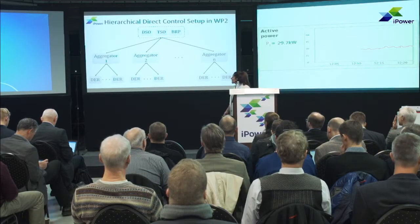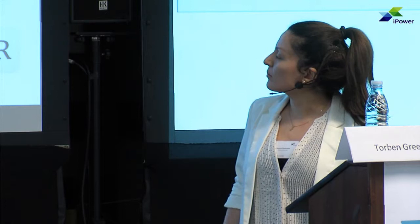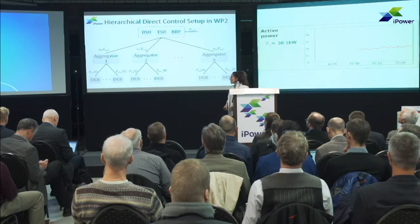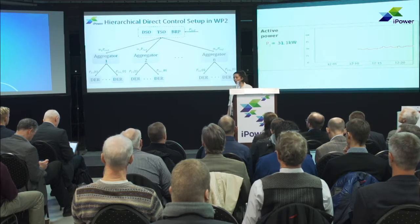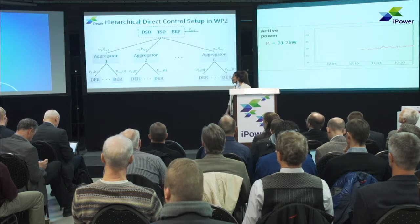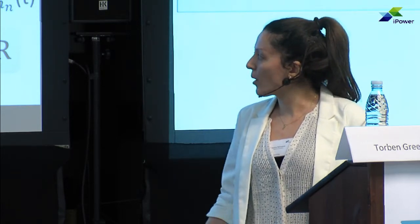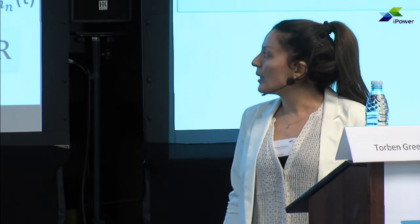We assume industrial consumers in our setup — a few of them are big enough to be in the market. We consider a central controller at the aggregator that works based on direct control and information exchange between the DRs. The aggregator receives a power reference from the top-level controller — could be DSO, TSO, or BRP — and should follow this reference within a certain actuation time.